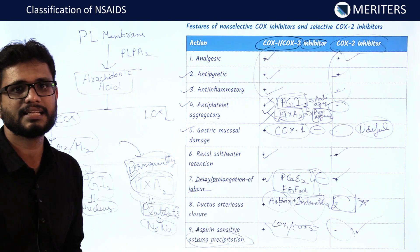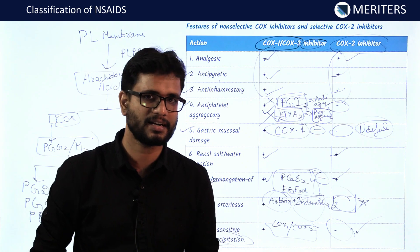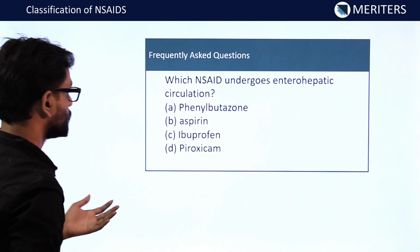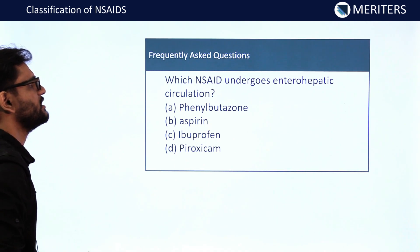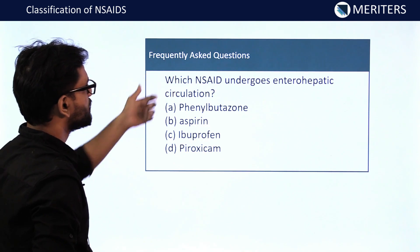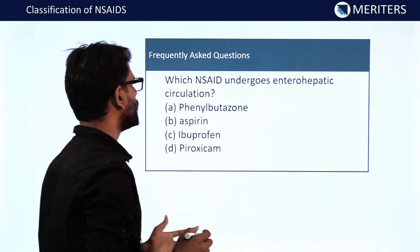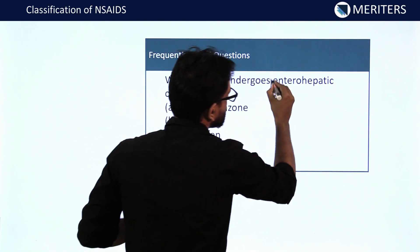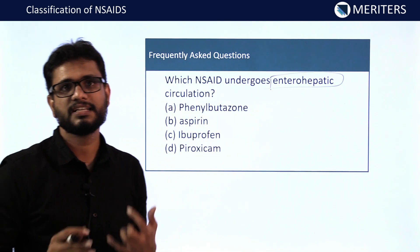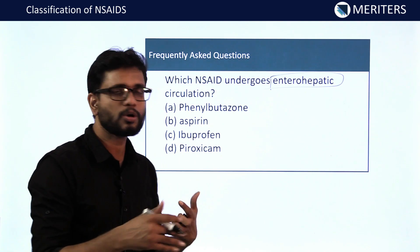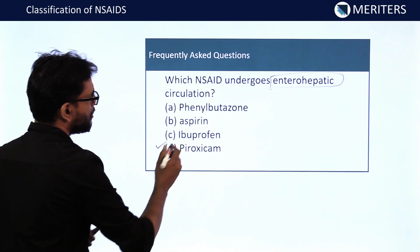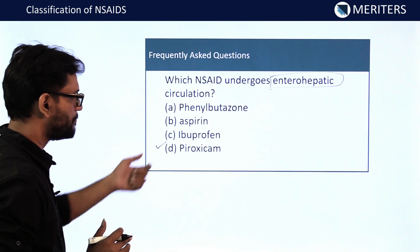Now for frequently asked exam questions on NSAIDs. The first: which NSAID undergoes enterohepatic circulation? Enterohepatic circulation makes drugs long-acting. The drugs tenoxicam and piroxicam are long-acting drugs, so the answer is piroxicam.